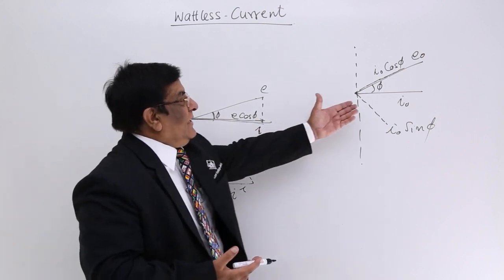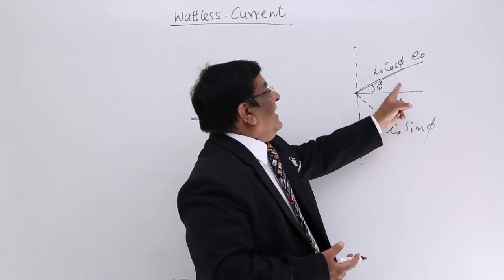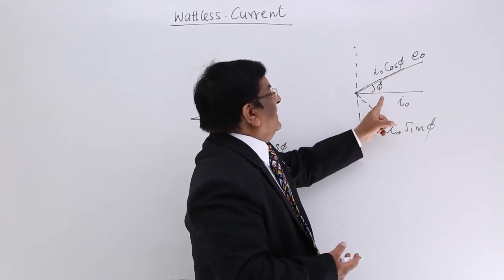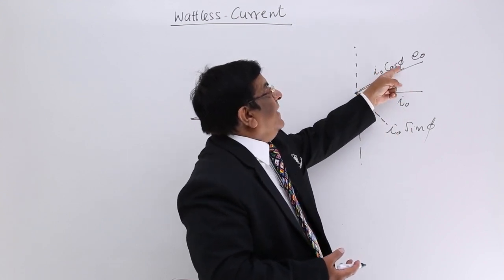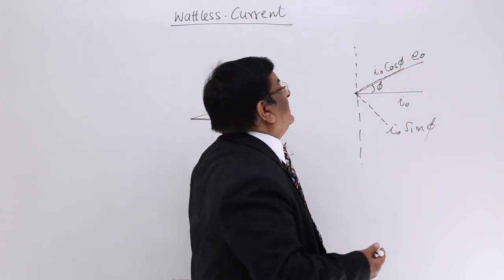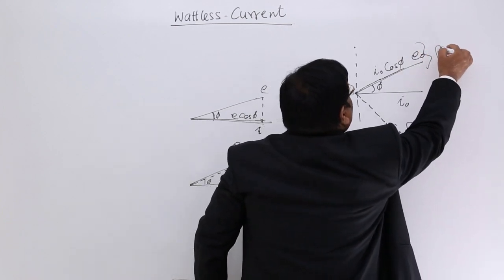That is what I am telling you. This is current, this is E, this is phase difference, and I cos φ is that factor which, when multiplied with E0, gives the power.